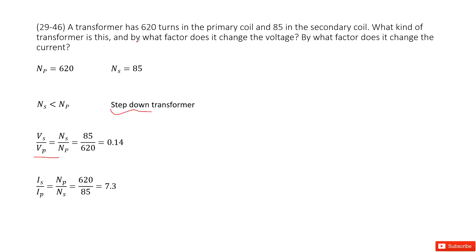Second question: by what factor does it change the voltage? We use this equation and input Ns and Np. So we get Vs over Vp equals Ns over Np equals 85 over 620 equals 0.14.